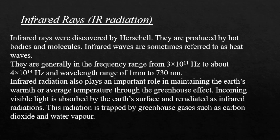Infrared rays, also called IR radiations, were discovered by Herschel. They are produced by hot bodies and molecules, and are sometimes referred to as heat waves. They generally lie in the frequency range of 3 × 10¹¹ Hz to about 4 × 10¹⁴ Hz and a wavelength range of 1 mm to 730 nm. Infrared radiations play an important role in maintaining the Earth's average temperature through the greenhouse effect. Incoming visible light is absorbed by the Earth's surface and re-radiated as infrared radiations, which are then trapped by greenhouse gases such as carbon dioxide and water vapour.